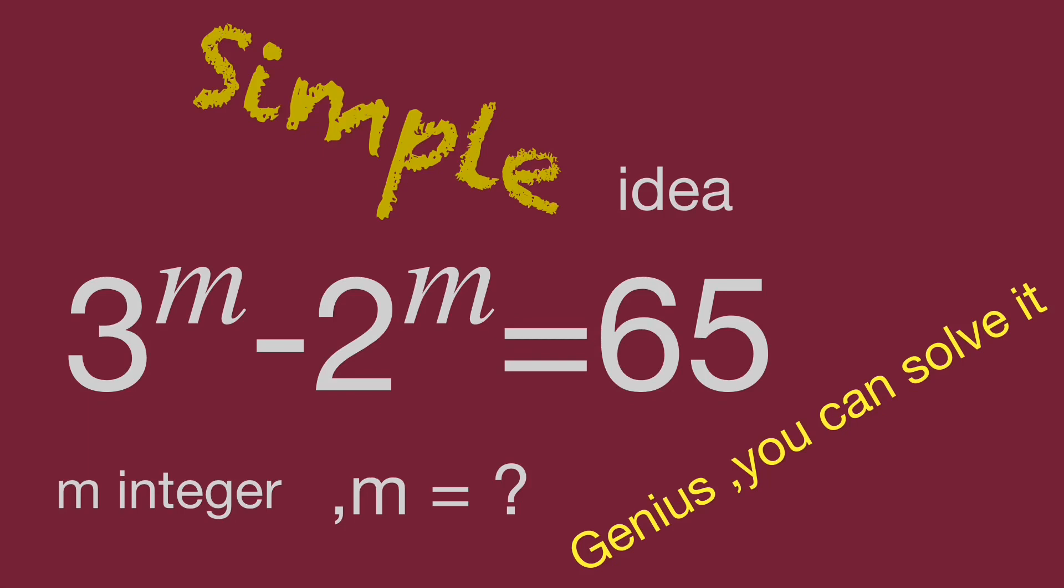While 3 power of m minus 2 power of m equals 65, m is an integer. Find the value of m.